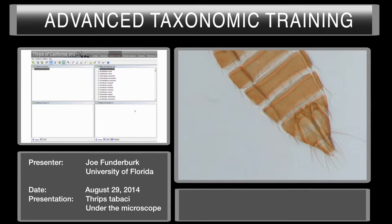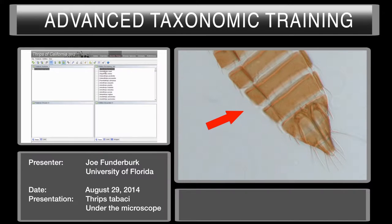In this video, we're going to use the Thrips of California Lucid Key to identify a thrips. We've clicked on 'Identify Thrips' and this is the page that we're on. Using this key, you'll see there are features available and features chosen, and in this box we have all of the various species of thrips included in this Lucid Key.